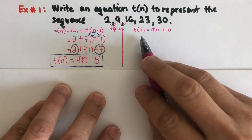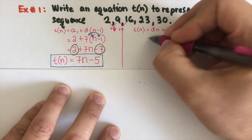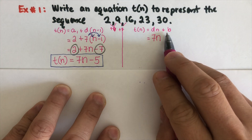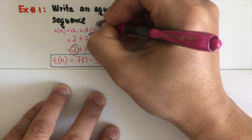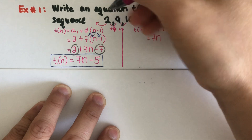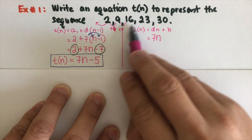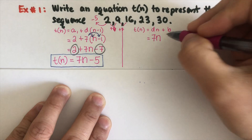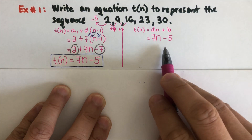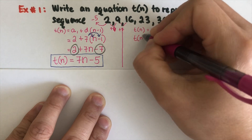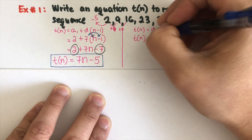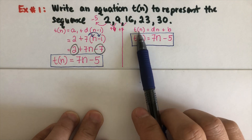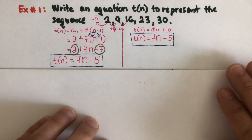Now using the second formula for the same example: the difference is 7, so we write 7n. Then b is the zeroth term — we go backwards one step from the first term of 2. Since it goes up by 7, we subtract 7, giving us negative 5 as the zeroth term. So t of n equals 7n minus 5 — the same answer. The second equation is similar to y equals mx plus b, which you may already know.